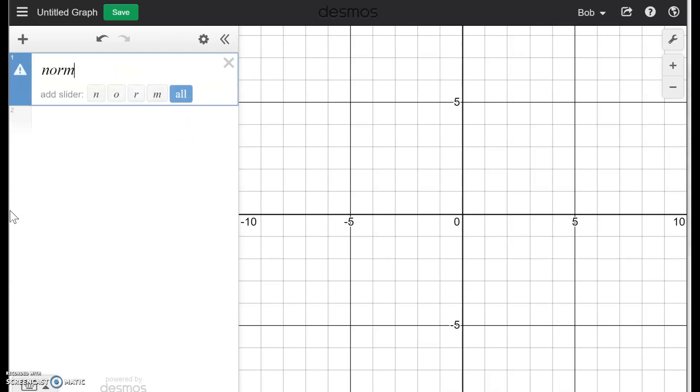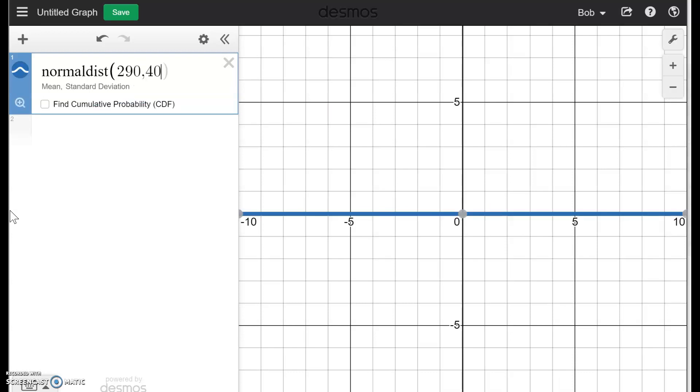So the command we need is normaldist. And notice that normaldist is now no longer italicized. It means it's a command we like. And within parentheses, you're going to tell the mean and standard deviation. In this problem, we have a mean of 290 and a standard deviation of 40.